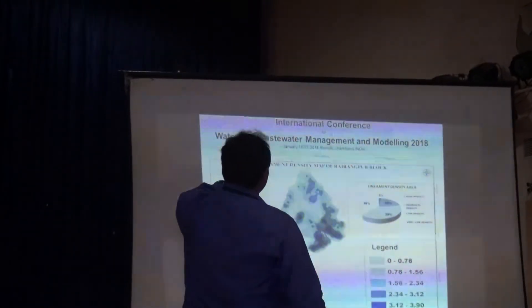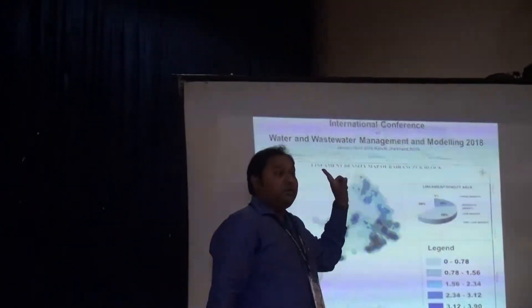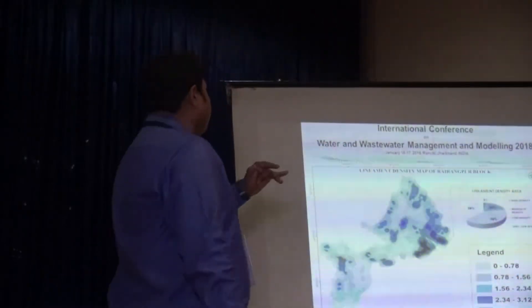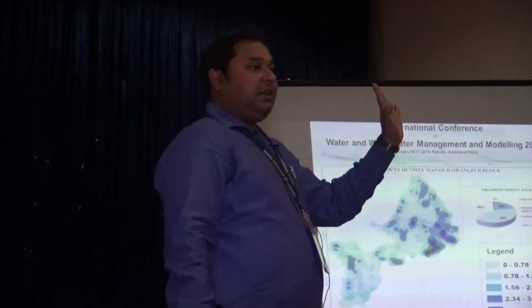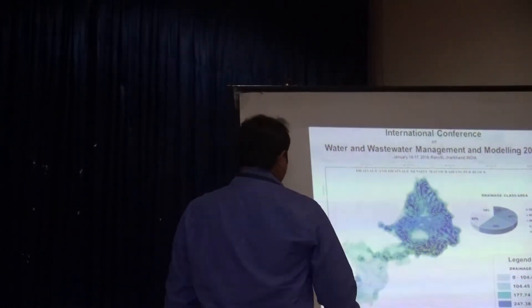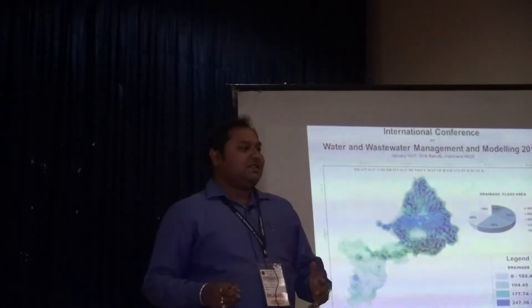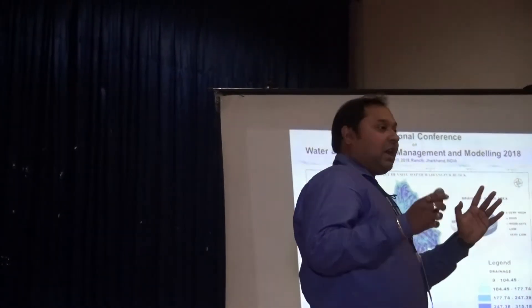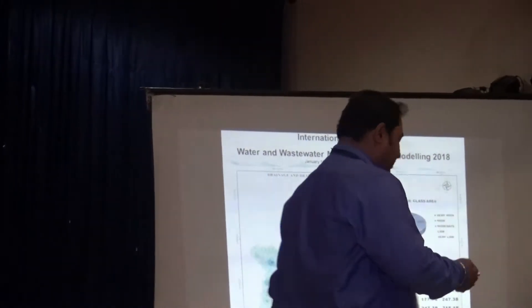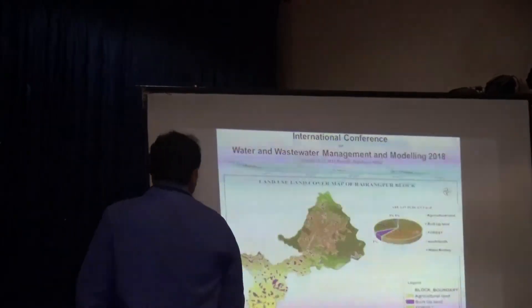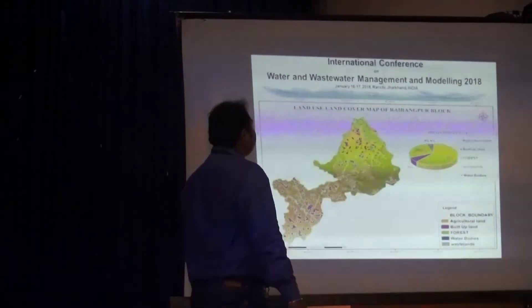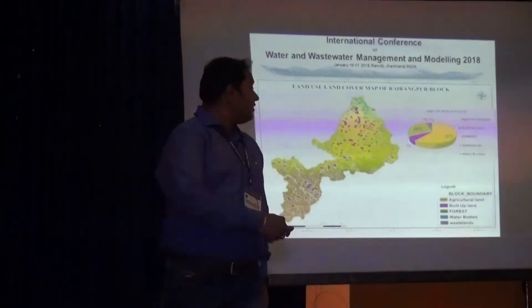This is the lineament density map, which is directly related to groundwater potential. If lineament density is high, groundwater potential is also high. For drainage density, the relationship is the reverse — if drainage density is high, groundwater potential is low. Most of the area in Rairangpur is under agriculture, around 63 percent.